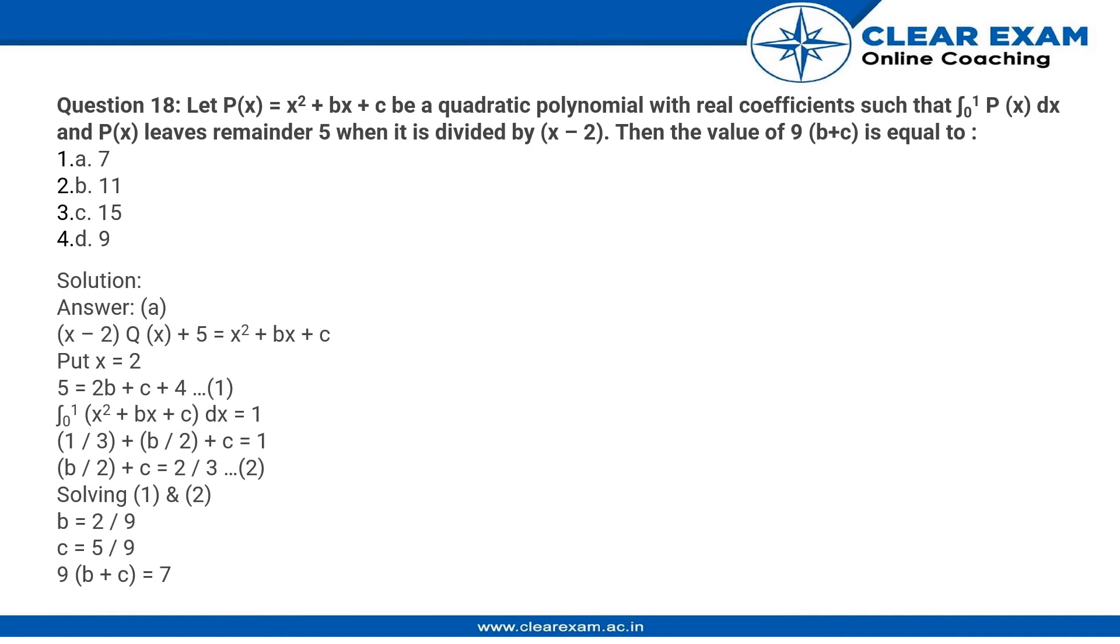So we need to find the value of b and c. Over here we can use the fact that (x - 2), which is the divisor, multiplied by the quotient plus the remainder gives us the